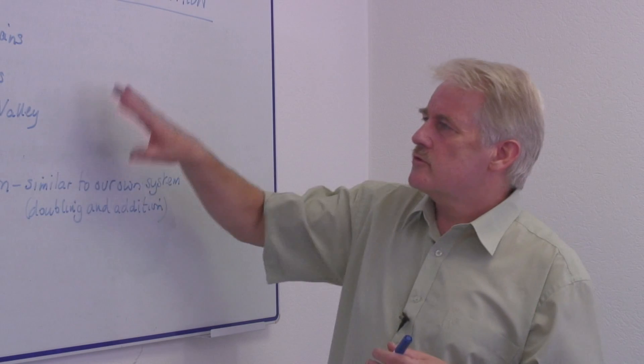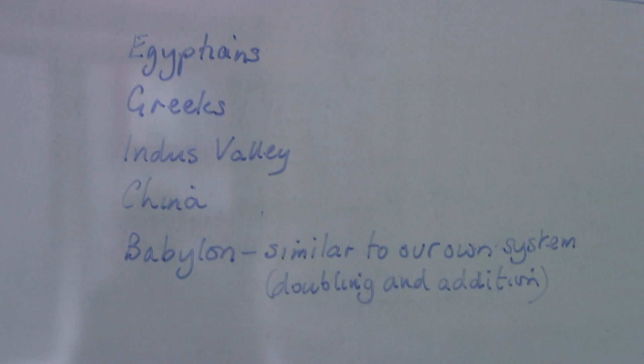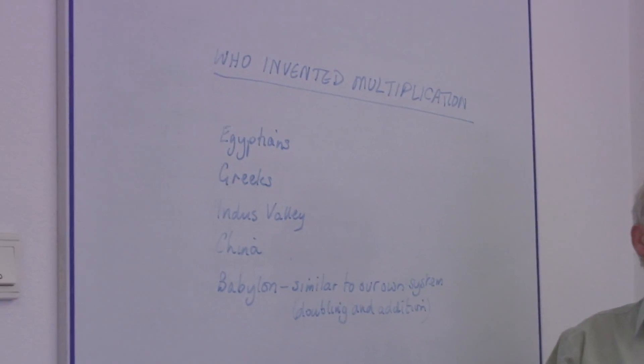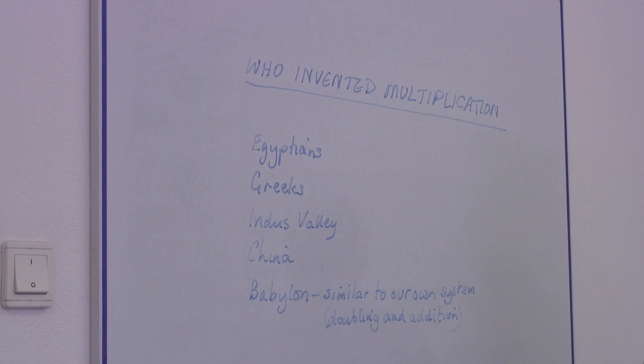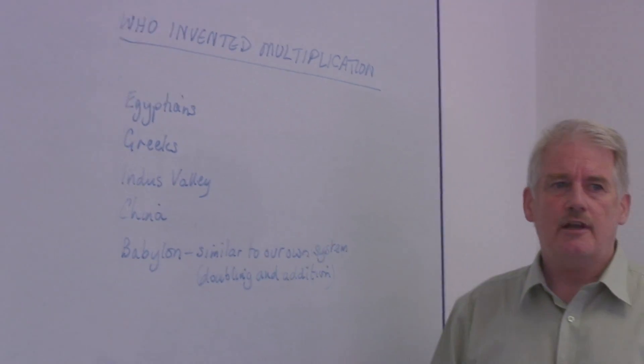So over the thousands of years—this would be the Egyptians four thousand years ago—from those last four thousand years, multiplication in its formalization has developed to something like it is today with very little change.